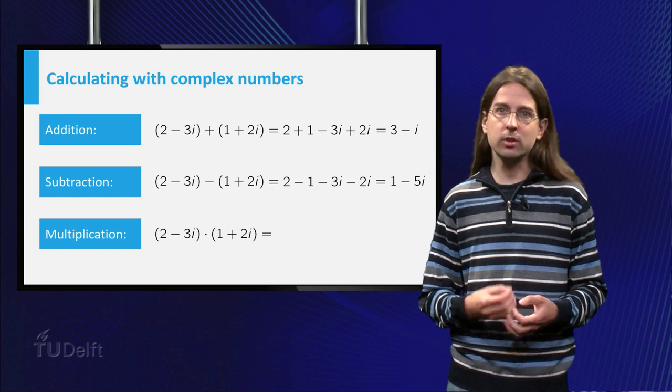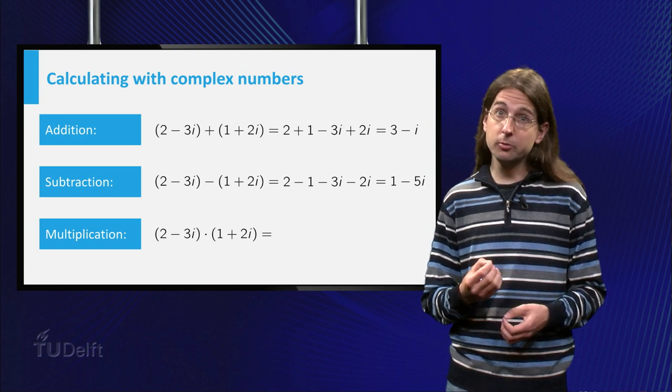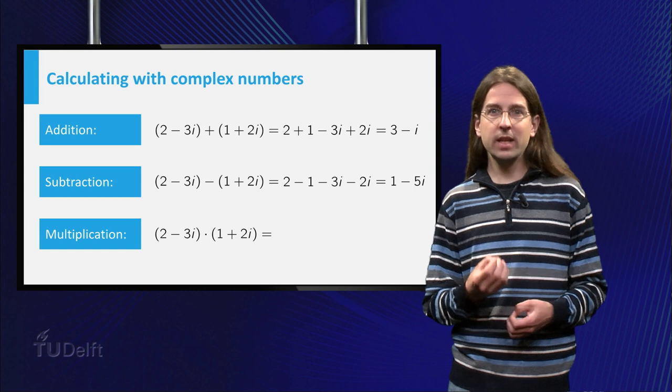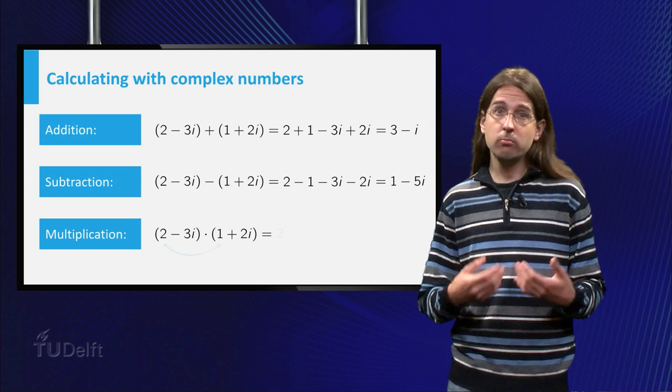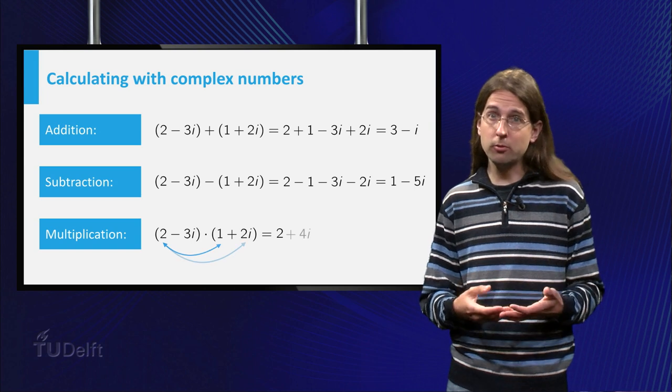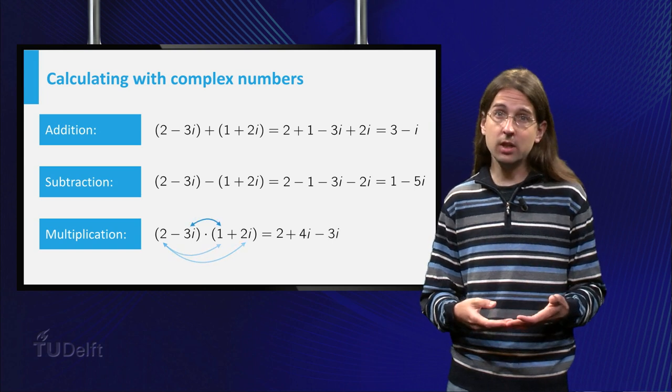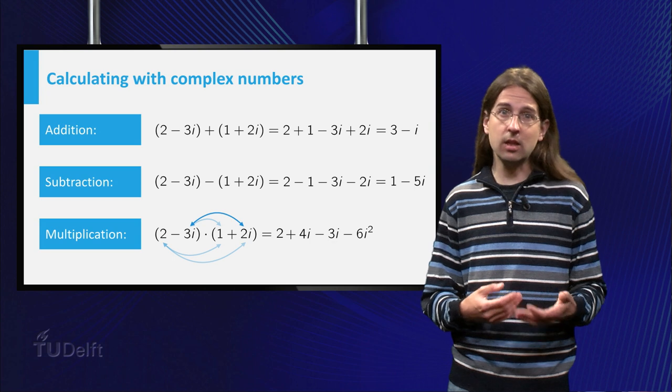Multiplication, however, is more difficult. The multiplication is defined by expanding the product as usual. So here we get 2 + 4i - 3i - 6i².